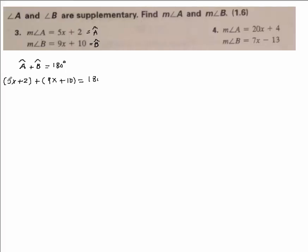Plus angle B, which is 9x plus 10. These two should add up to 180 degrees. So all I have to do now is solve for x. Here I have 5x plus 9x, that adds up to 14x.